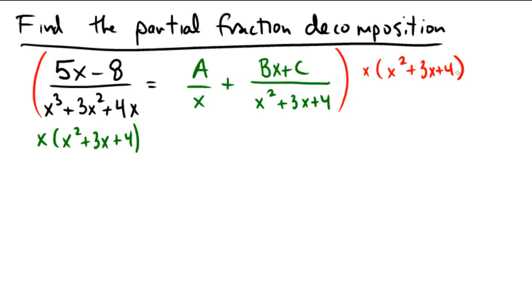And when we do so against the far left, all we're left with is 5x minus 8. When we do so against the A part, the x's will reduce, so we'll have A times x squared plus 3x plus 4. And then when we do it against the other part, the x squared plus 3x plus 4 will cancel out, so we'll just have Bx plus C multiplied against an x.